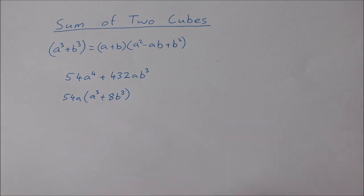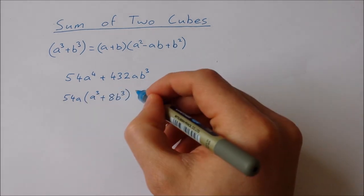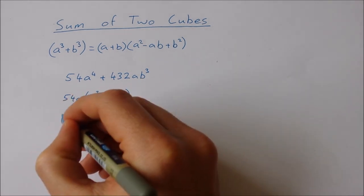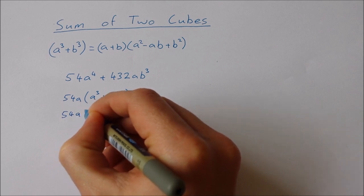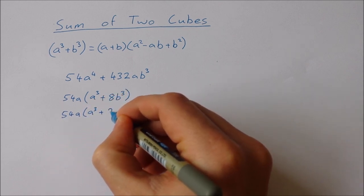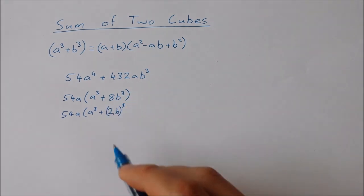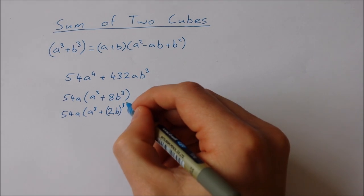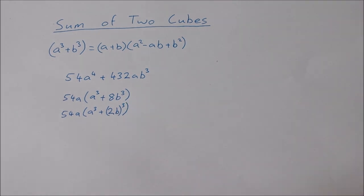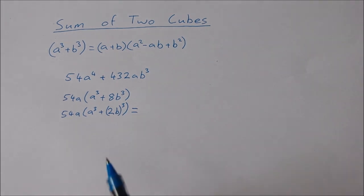Now I can rewrite this again as 54a times a³ plus 2b³, because 2b times 2b times 2b is 8b³. Now I can go ahead and use my formula here.